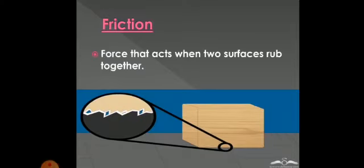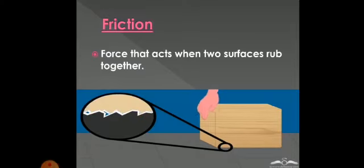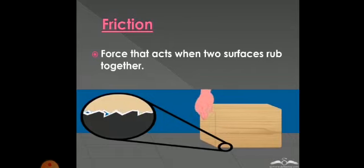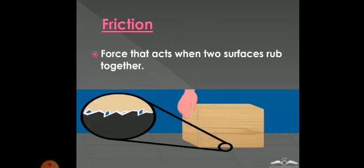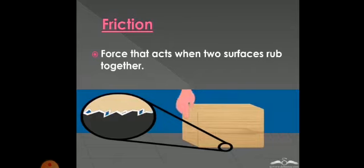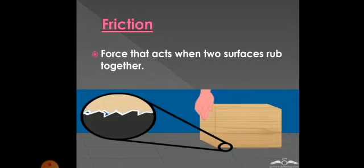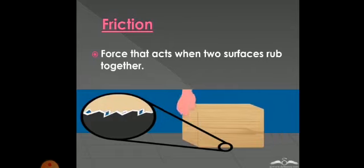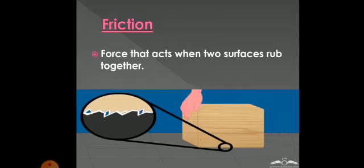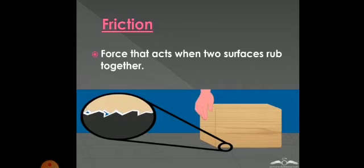Now we will talk about friction. Try to rub your hands together — this is friction. Friction is a contact force. Friction is a force that acts when two surfaces rub together, like when you rub your hands together. There is rubbing happening between the surface of a box and the surface of the ground, and this causes friction.